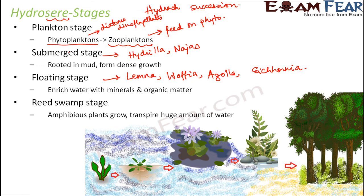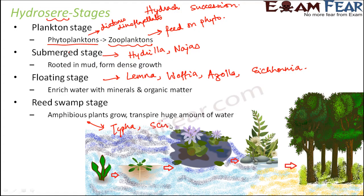Next comes the reed swamp stage, where amphibious plants grow and transpire a large amount of water. Amphibious plants are those which can survive both on land and in water. Examples include typha, scirpus, and sagittaria.